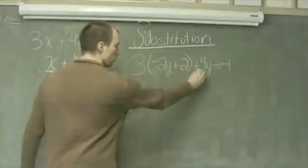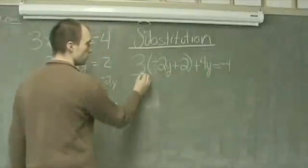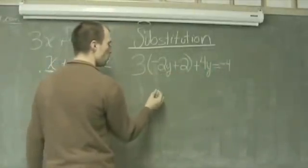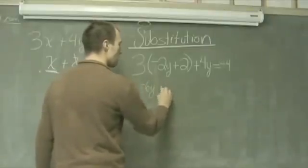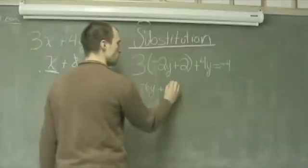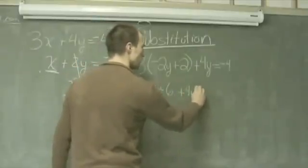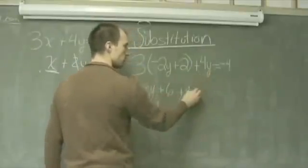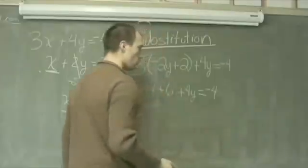At this point, I distribute the 3 and solve the problem. 3 times negative 2y gives me negative 6y, plus 3 times 2 gives me 6, plus 4y equals negative 4.